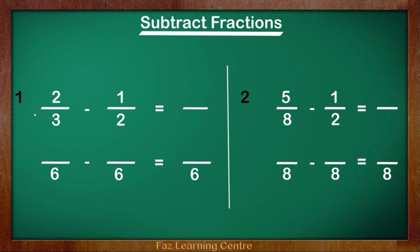Let's look at the first question: 2 over 3 take away 1 over 2, which is a half. At the bottom we already have a denominator. In order to take them away we need the same denominator, and we have two denominators which have already been given to us, which is 6.